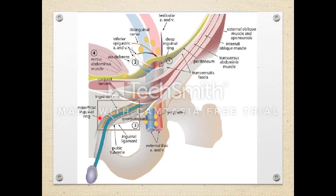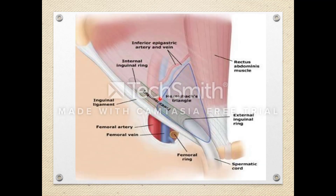In the diagram showing all layers — external oblique, internal oblique, transversus abdominis, and fascia transversalis — the deep inguinal ring is in the fascia transversalis and the superficial inguinal ring is in the external oblique aponeurosis. The inguinal canal is an oblique passage from deep to superficial inguinal ring. The deep ring is also called the internal inguinal ring and the superficial ring the external inguinal ring.